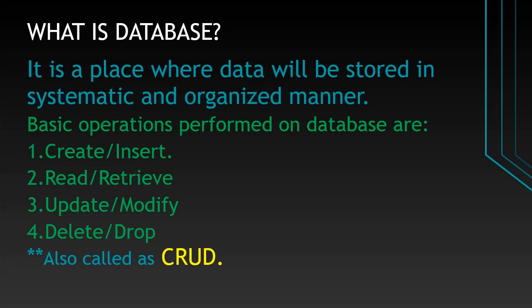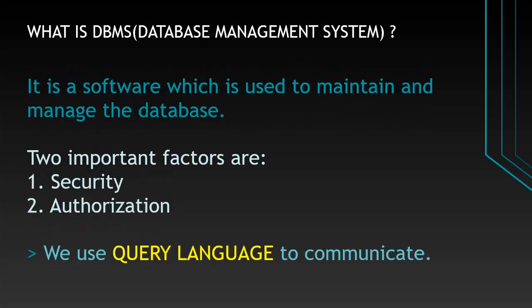The basic operations we can perform on a database are: we can create or insert data, we can read or retrieve existing data, we can update or modify available data, and we can delete or drop data. These are called CRUD — C for Create, R for Read, U for Update, D for Delete.